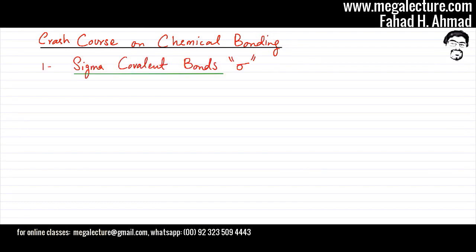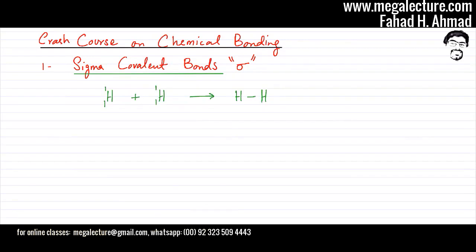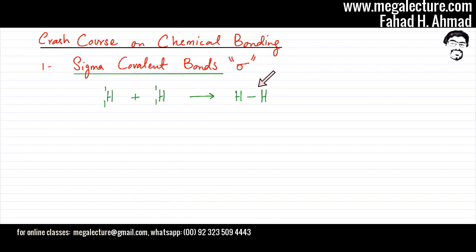We'll start off with the first type of bonding, which is called sigma covalent bonds, also referred to by its Greek symbol sigma. I'm going to explain sigma covalent bonds using the example of two hydrogen atoms bonding with each other to form an H2 molecule, and let's see how sigma bonds are formed between these two H atoms.